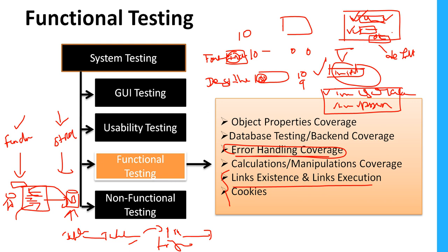These are the different types of testing that come under functional testing. As a functional tester you need to perform all these types of testing based on the customer requirements — thoroughly read and understand the requirements to know what kind of testing needs to be performed and how. That's all about functional testing. Thanks for watching — please subscribe to the channel for more updates.